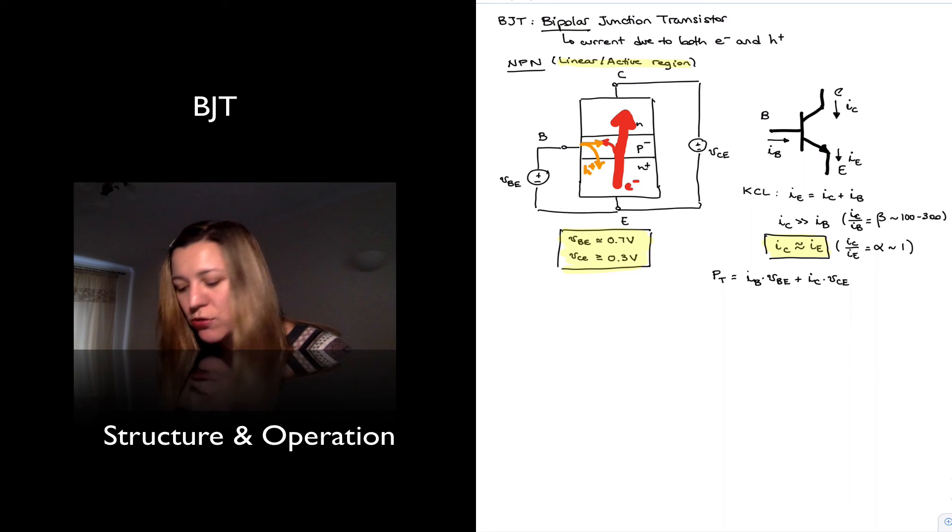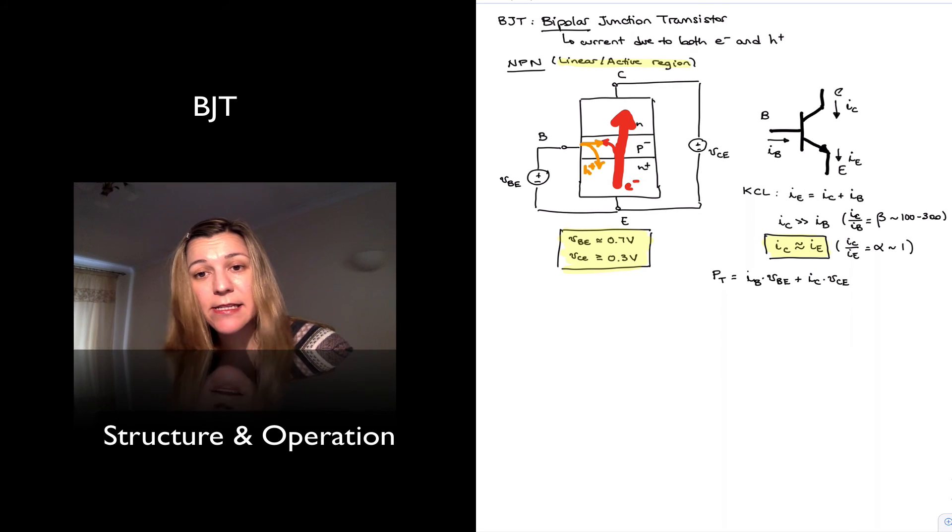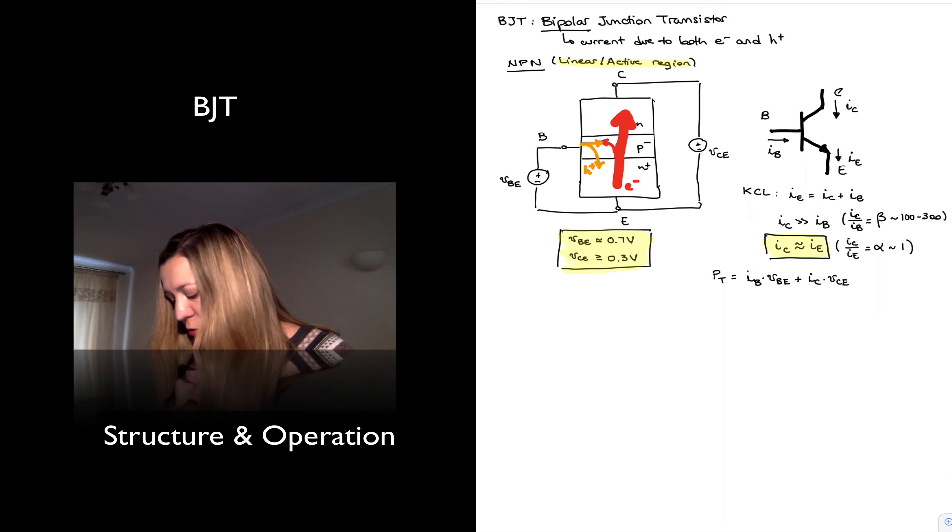Now again, in the linear region, VBE is going to be small, around 0.7 volts, and IBE is going to be really small, around 100 times smaller than IC. And so that means that the first term IBE times VBE is going to be very small compared to the second term. So we're going to be able to approximate the power dissipated by the transistor as IC VCE. Again, when we're talking about the linear region.